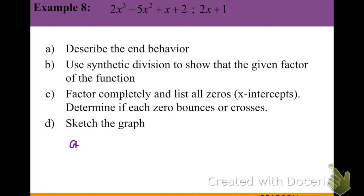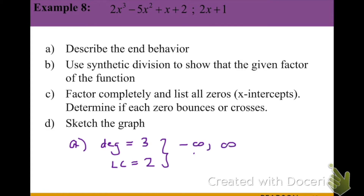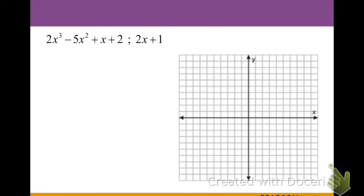On our next example, we're going to work with the polynomial 2x cubed minus 5x squared plus x plus 2, and we're given the binomial 2x minus 1. Let's describe the end behavior. In this case, our degree is 3, which is odd, with a positive leading coefficient of 2, so this is going to be a fall-rise since it's odd degree with opposite behavior and positive. Our next step is to use division to prove that 2x plus 1 is a zero.